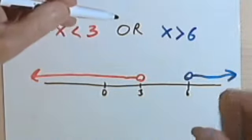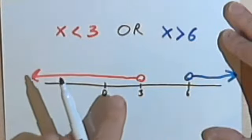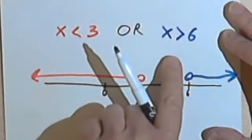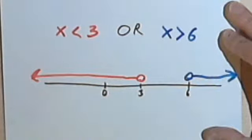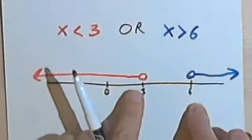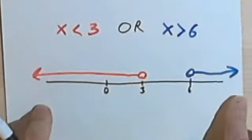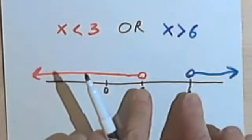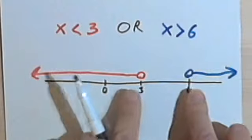And I've got this word OR. In math, OR means pretty much the same thing as in English — we can either have x is less than 3, or we can have x is greater than 6. We can also have both. So what I'm looking for is the area where I've either got a red line or a blue line or both lines. Now in this case there's no place where I have both lines. So my graphic display of this compound inequality is going to look like this.